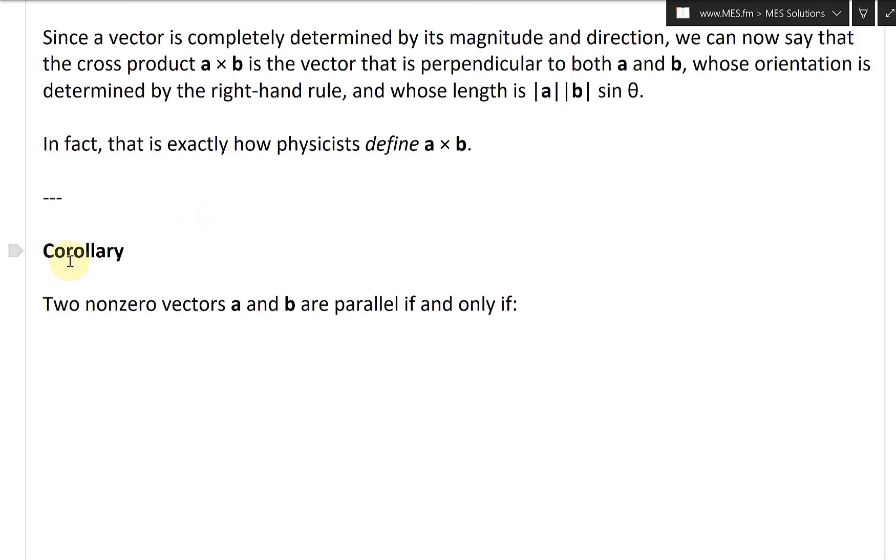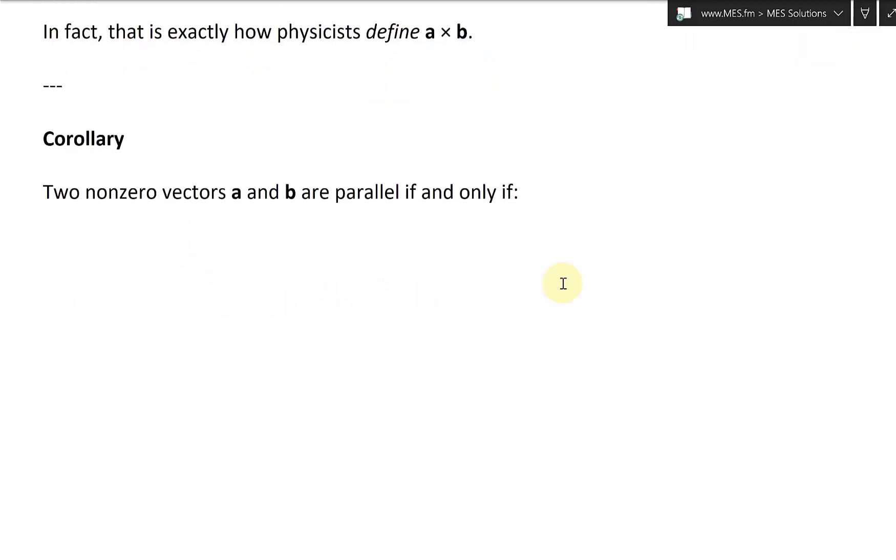Anyway, it's going further, so corollary or a theorem that follows another one. Two non-zero vectors A and B are parallel if and only if their cross product equals zero.